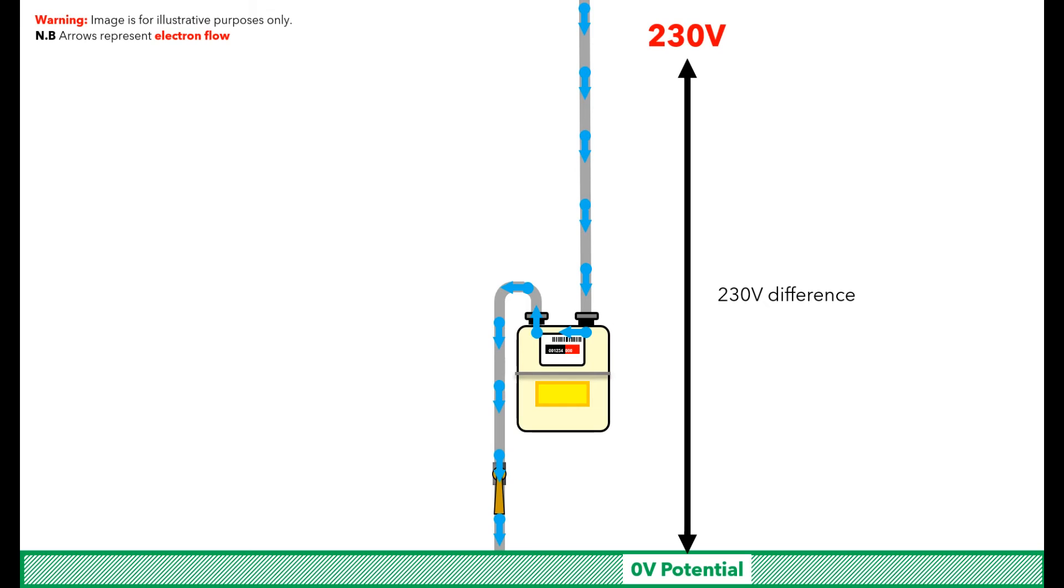If we had a fault voltage of 230 volts, this would mean that we have a potential difference of 230 volts to earth. In this example, once the meter is removed, the electrons in a fault condition can no longer flow to earth, but would still be attracted to it.